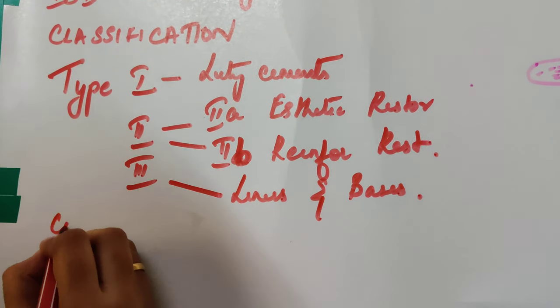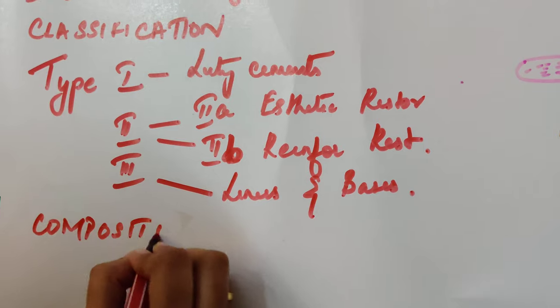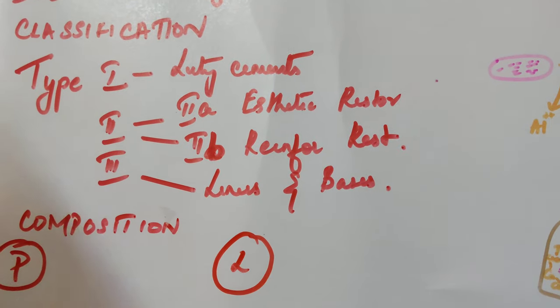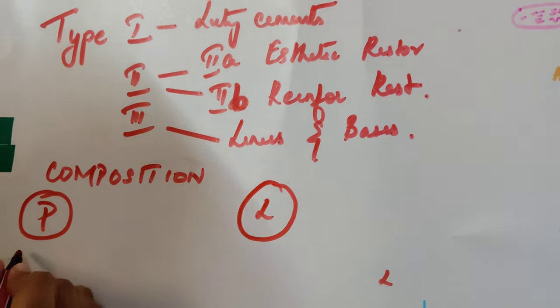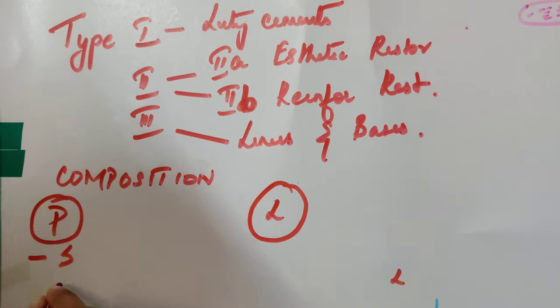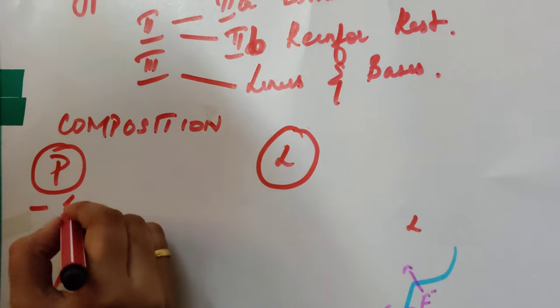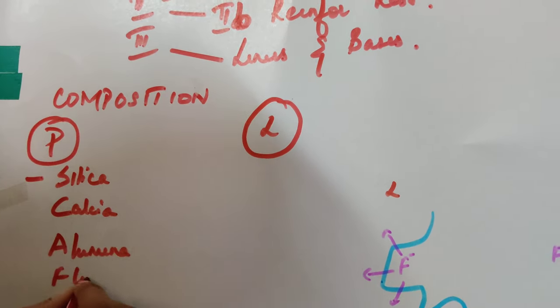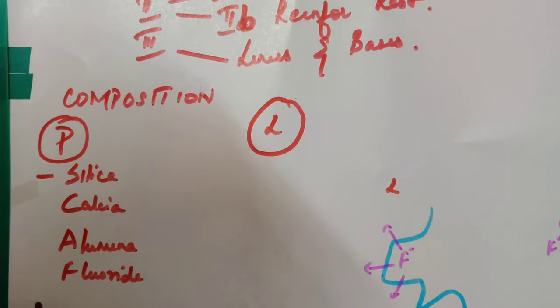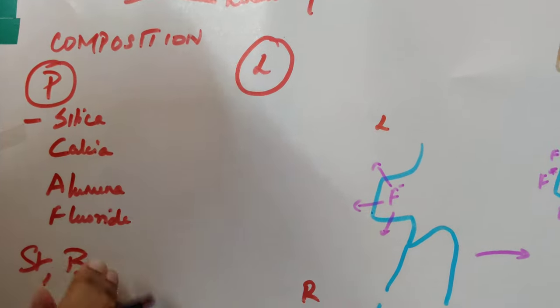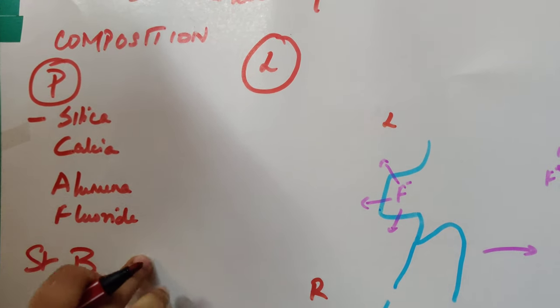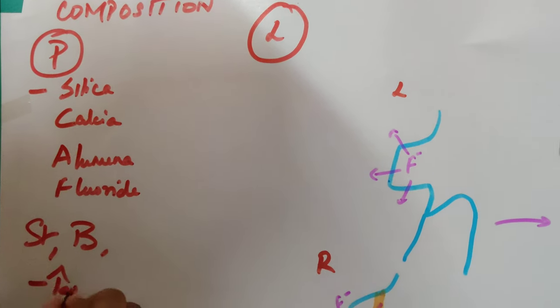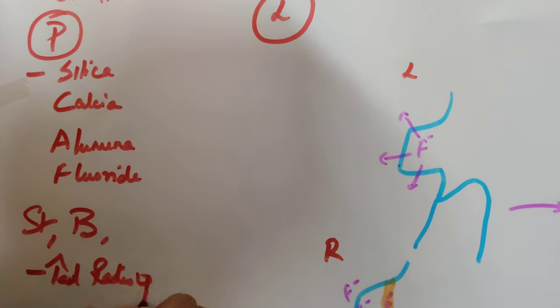Next, coming to the composition of GIC. First let's see about the powder component compositions. Just remember SCAF - it contains silica, calcium, alumina, and fluoride. It will also contain something called strontium and barium or any other heavy metal oxides. These compounds are there because they will increase the radio opacity.